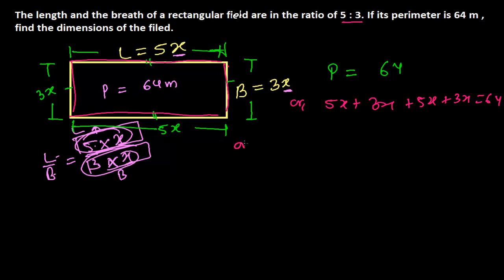Adding these up: 5X plus 3X is 8X, then 8X plus 5X is 13X, and 13X plus 3X is 16X. So 16X equals 64.